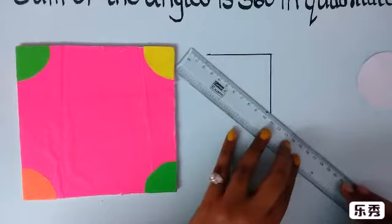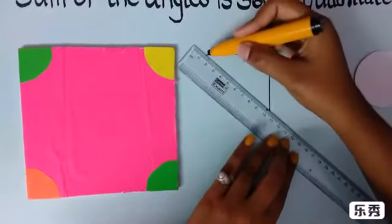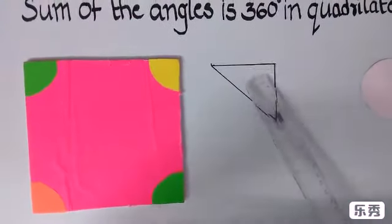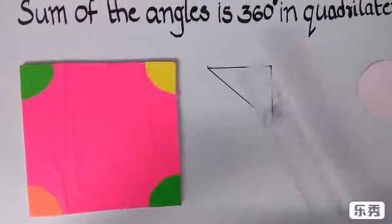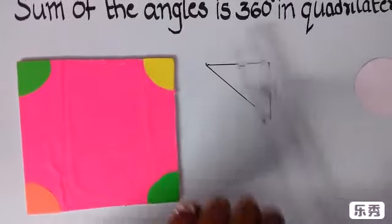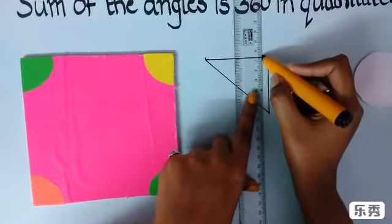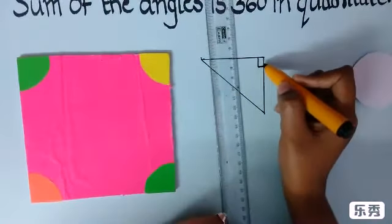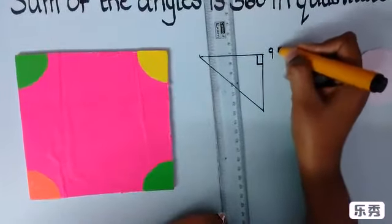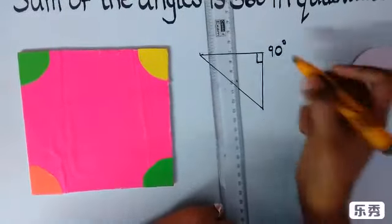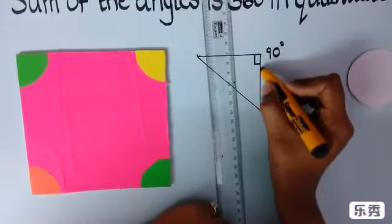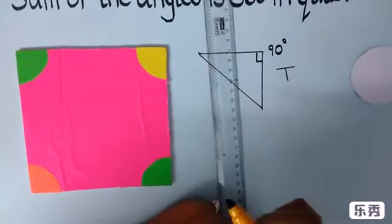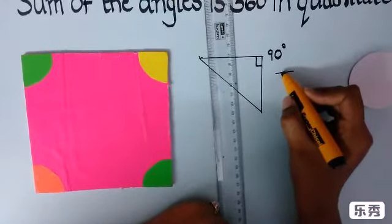I'm just joining these two. See, this is one corner of the quadrilateral. See what is the angle here? This is 90 degrees. See, these are perpendicular lines. This is perpendicular, so always the perpendicular angle is 90 degrees.